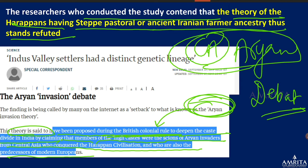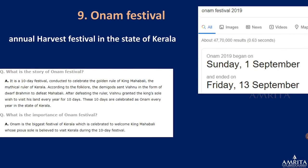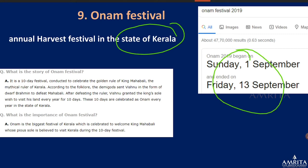Next is the Onam festival, celebrated in the state of Kerala from September 1 to September 13. The story behind Onam is associated with the Vaman avatar of Lord Vishnu and the legendary rule of King Mahabali.